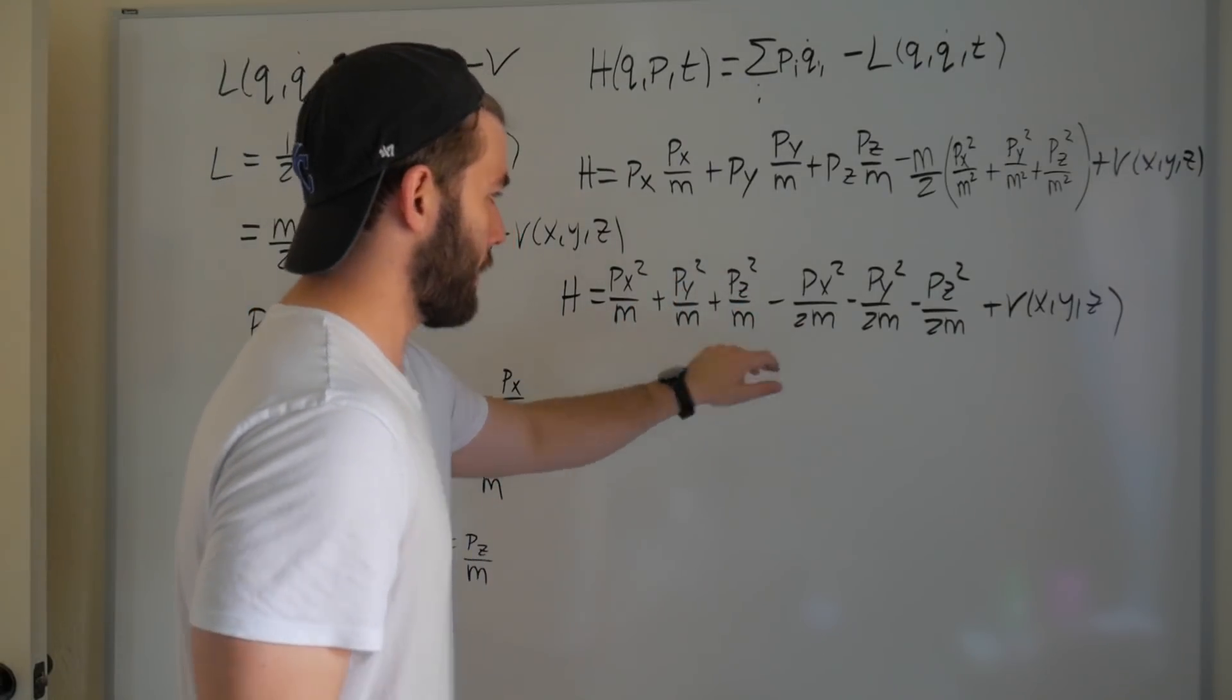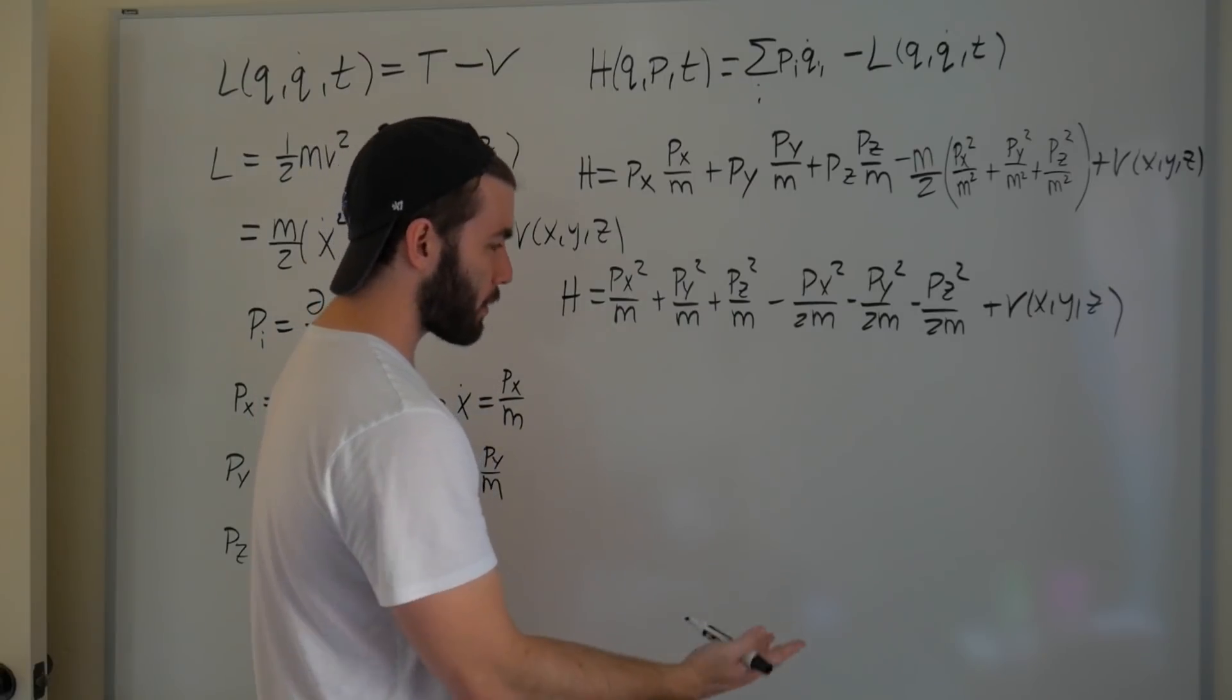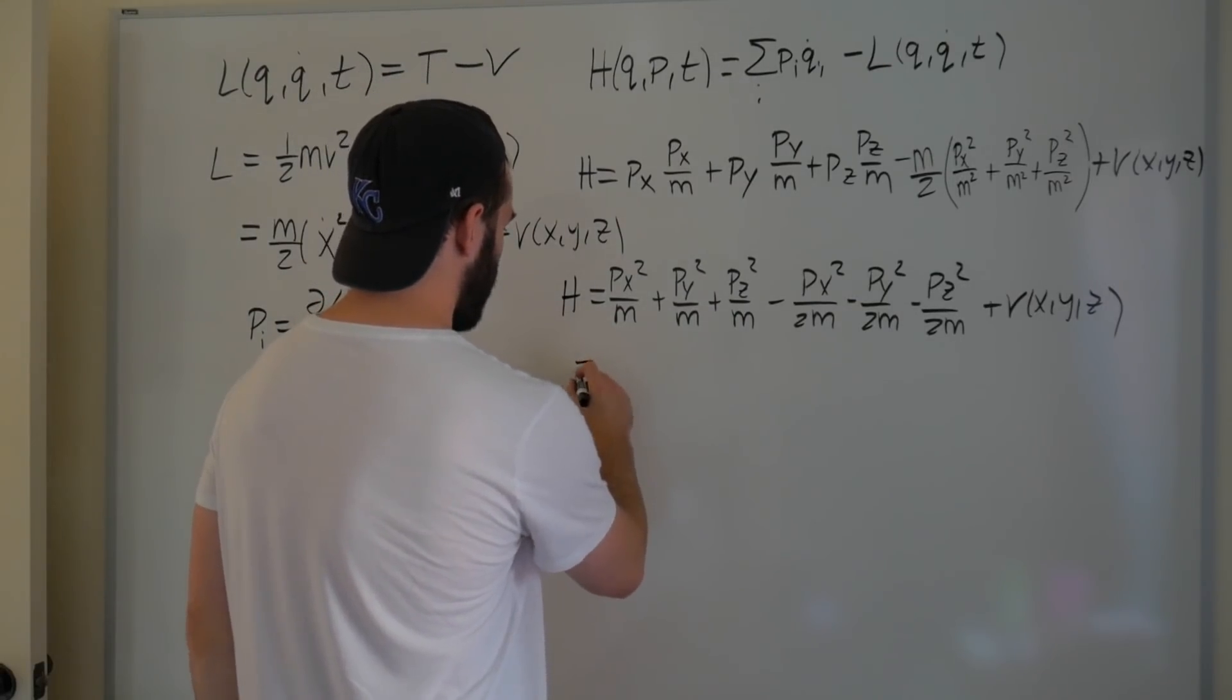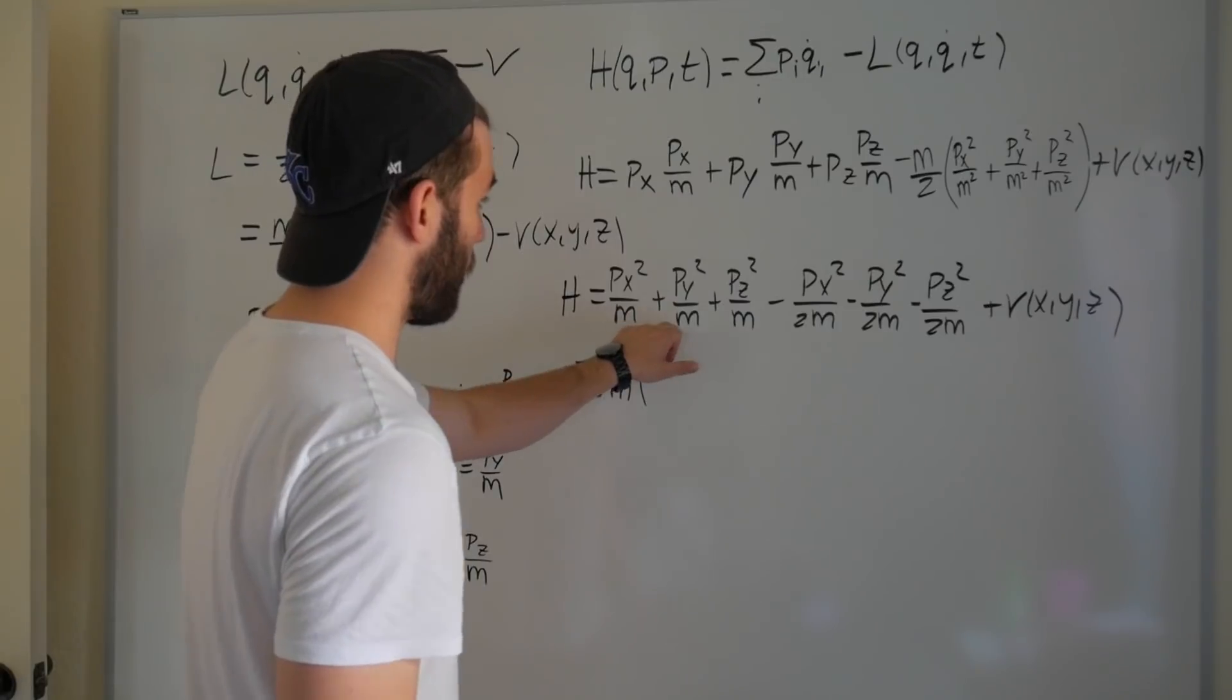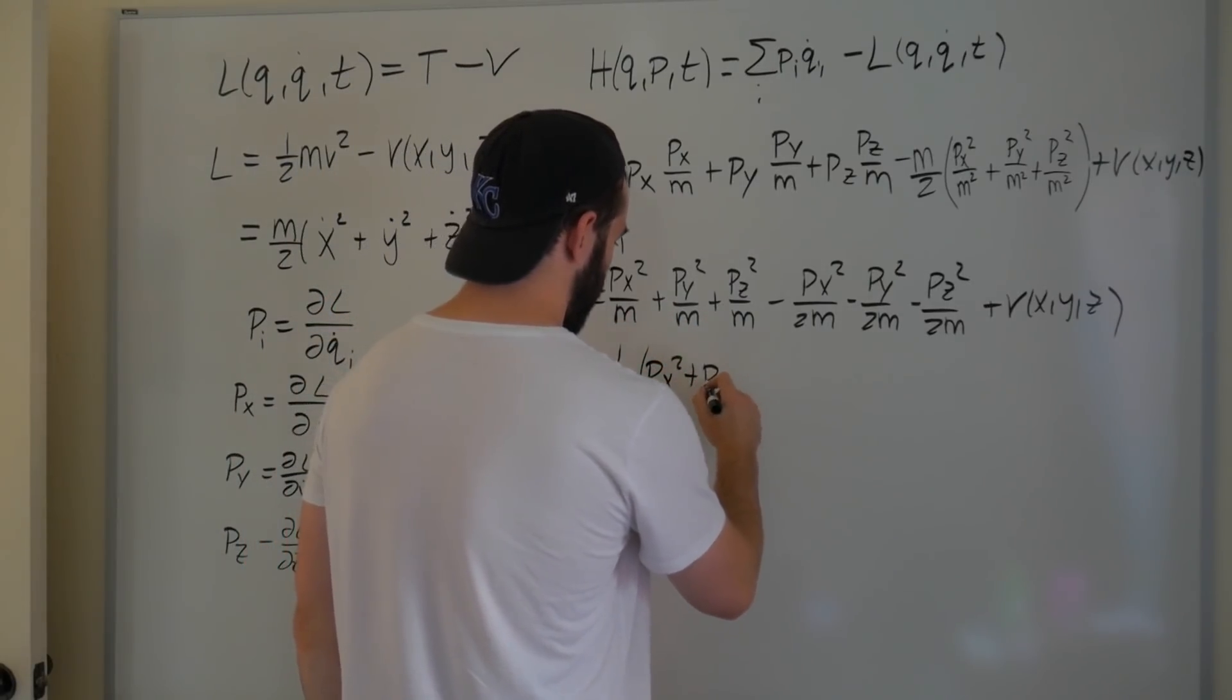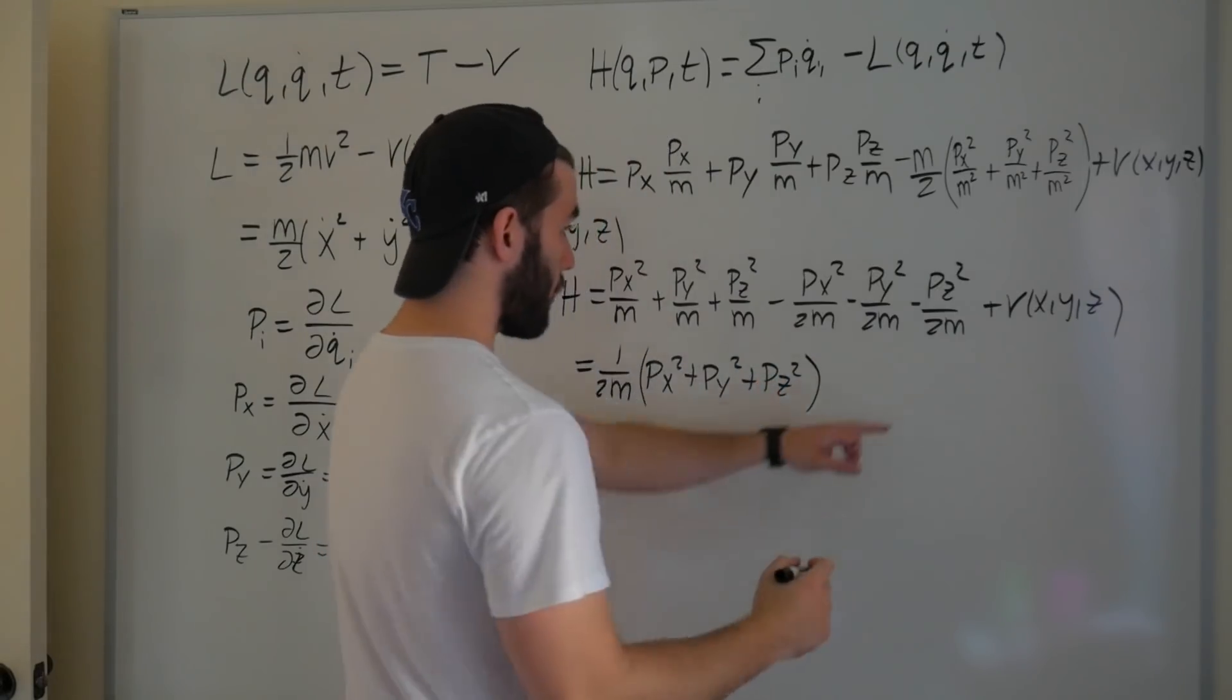Now, 1 minus 1 half is 1 half, which tells us px squared over m minus px squared over 2m is just px squared over 2m. So we can write all of this as, let's just factor out the 1 over 2m. That's going to be the same case for x, y, and z. It's going to be px squared plus py squared plus pz squared, plus our potential.